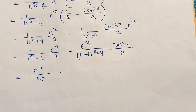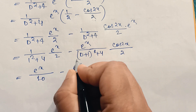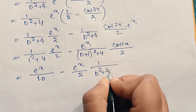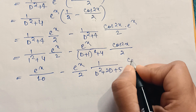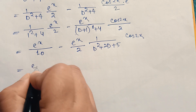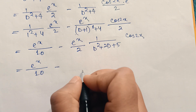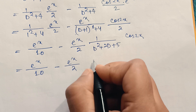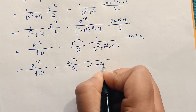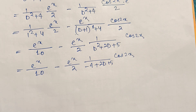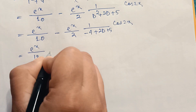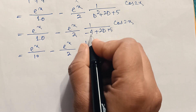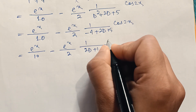Expanding (D+1)² + 4 gives D² + 2D + 1 + 4 = D² + 2D + 5. So the expression is eˣ/10 minus eˣ/2 · 1/(D² + 2D + 5) · cos2x. Substituting D² = -4, the denominator becomes -4 + 2D + 5 = 2D + 1. So this is eˣ/10 minus eˣ/2 · 1/(2D + 1) · cos2x.